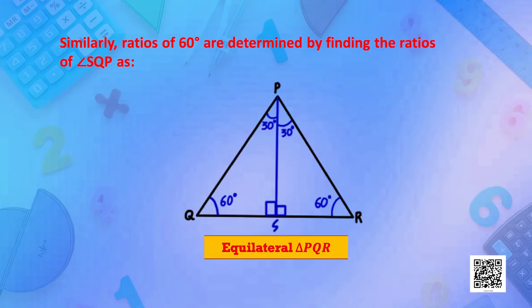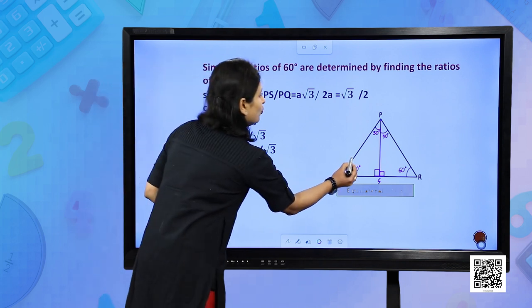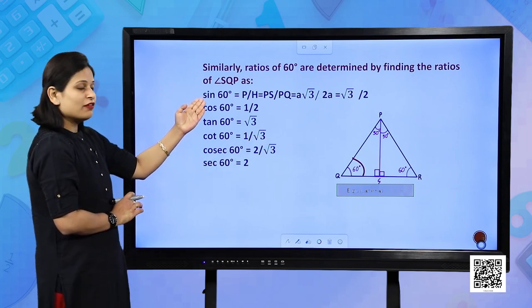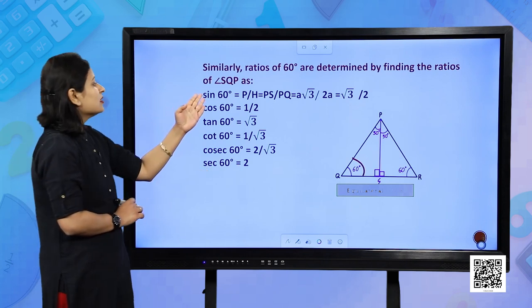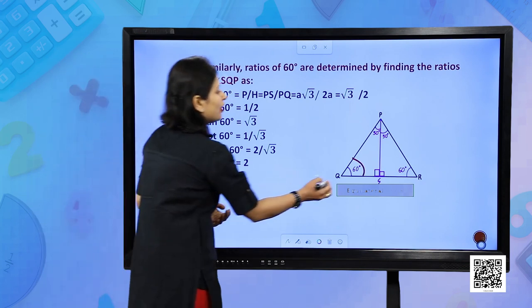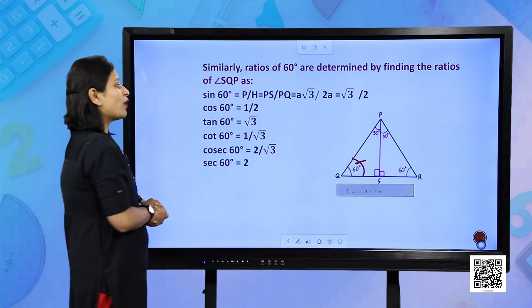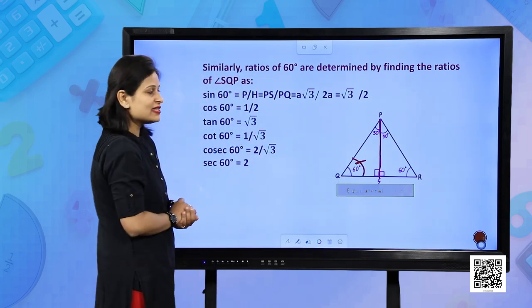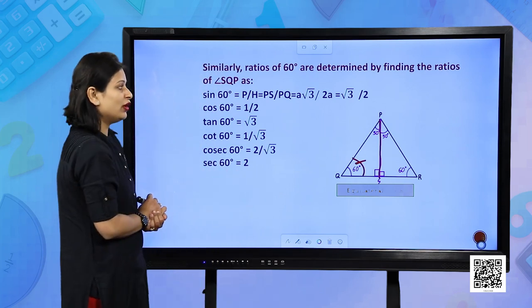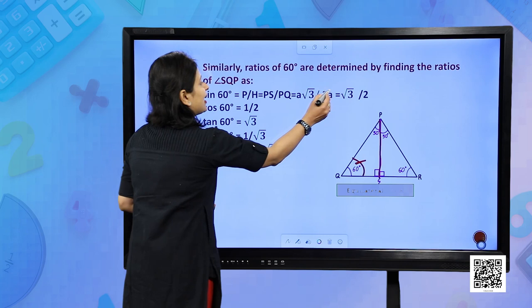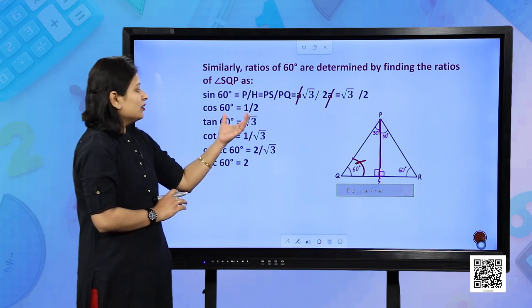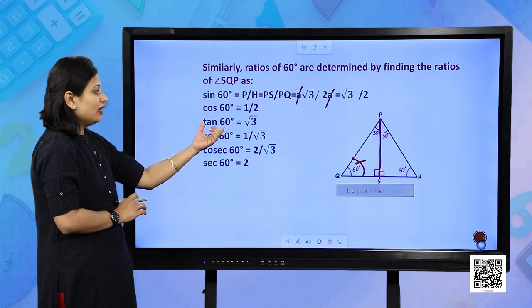Similarly, ratios of 60 degree are determined by finding the ratios of angle SQP, which is 60 degree. Since we have calculated PS, we can find the trigonometric functions. Sin 60° = perpendicular/hypotenuse. Considering angle PQS, perpendicular is PS and hypotenuse is PQ. So PS/PQ = √3·A/(2A) = √3/2.